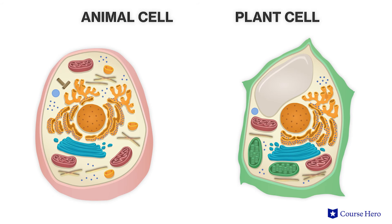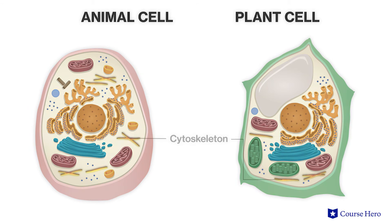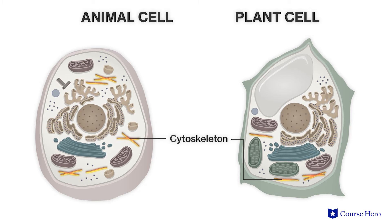In addition to these organelles, all eukaryotic cells also possess a cytoskeleton, a network of protein fibers that runs through the cytoplasm, which among other things helps to maintain the cell's shape. This is especially important for animal cells as they lack a cell wall.